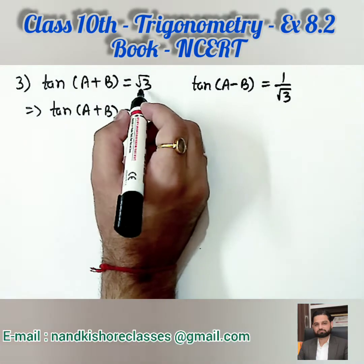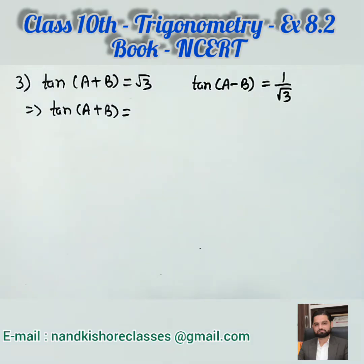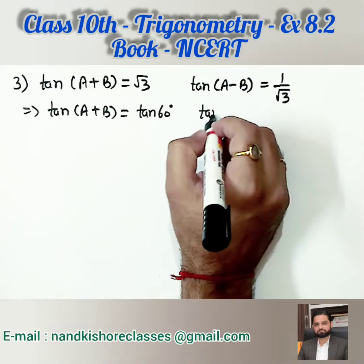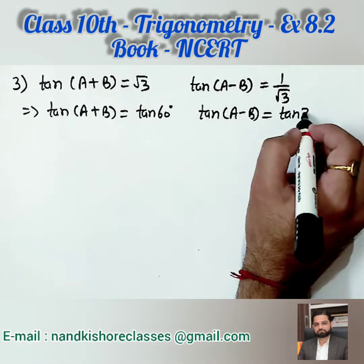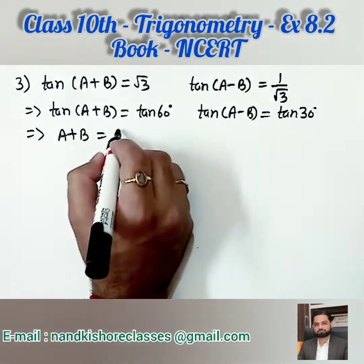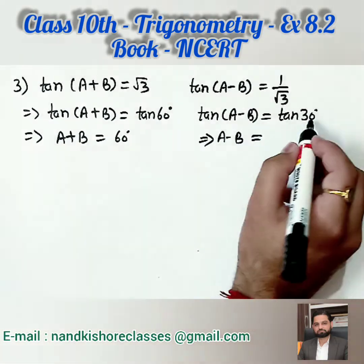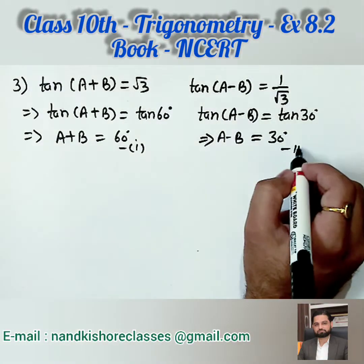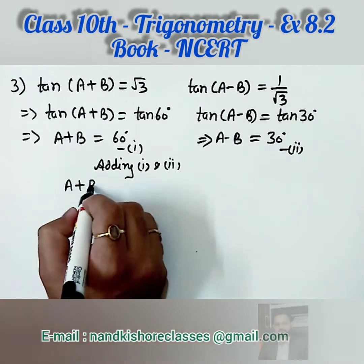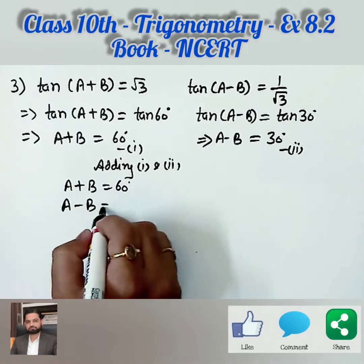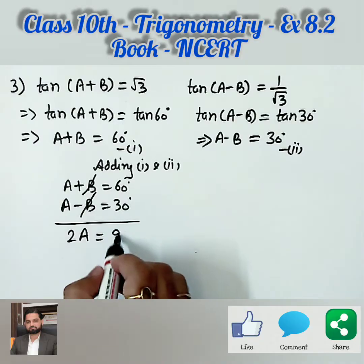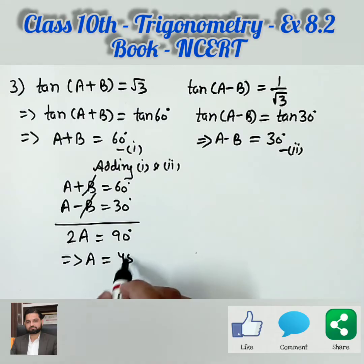Root 3 is the value of tangent 60 degrees, so we can write A + B = 60 degrees. And 1 by root 3 is the value of tangent 30 degrees, so A minus B = 30 degrees. Now we have two equations. Using the elimination method — adding both equations — the B terms cancel because they have opposite signs. So 2A = 90 degrees, and therefore A = 45 degrees.